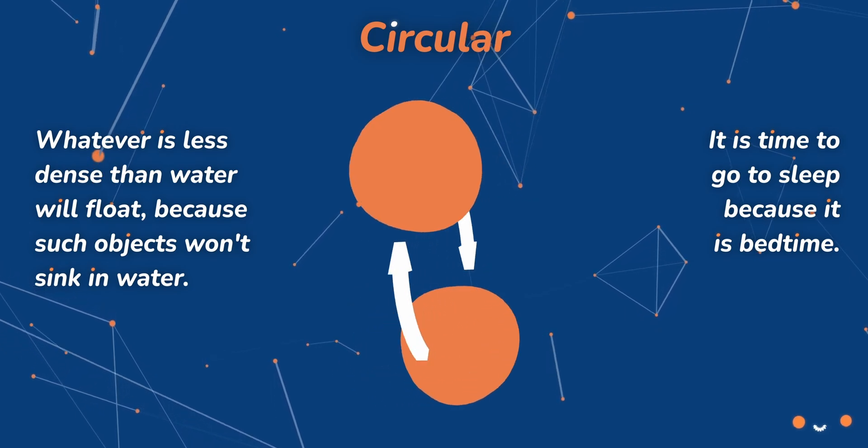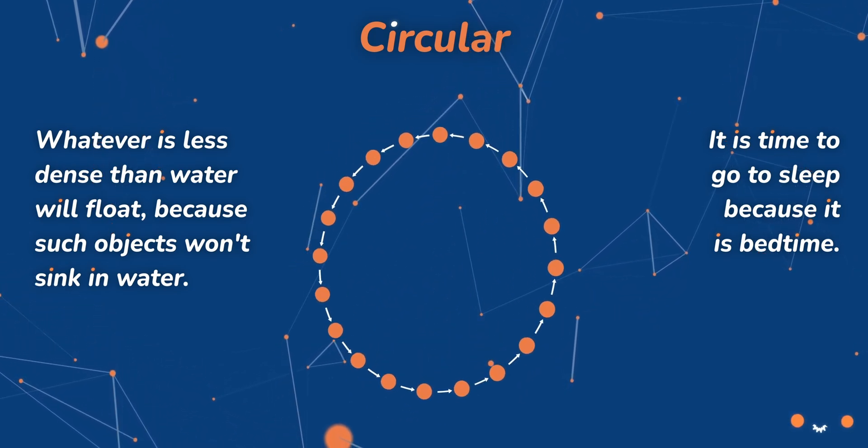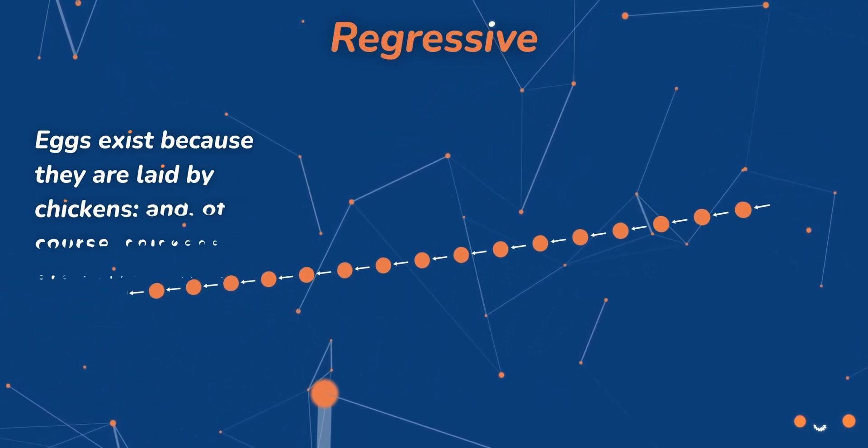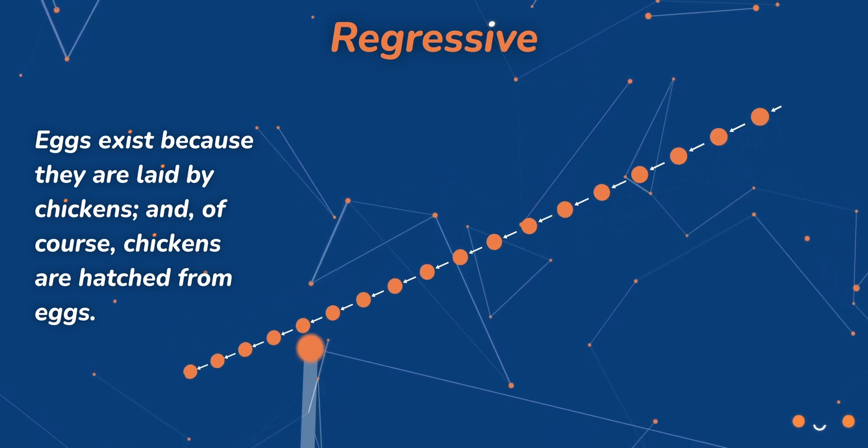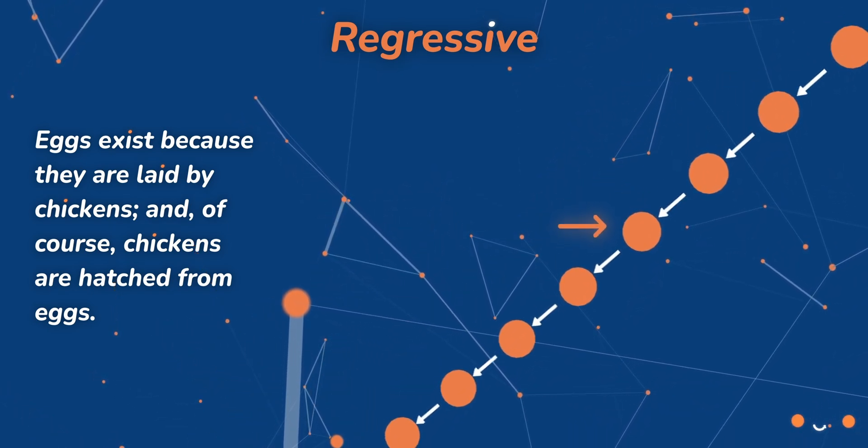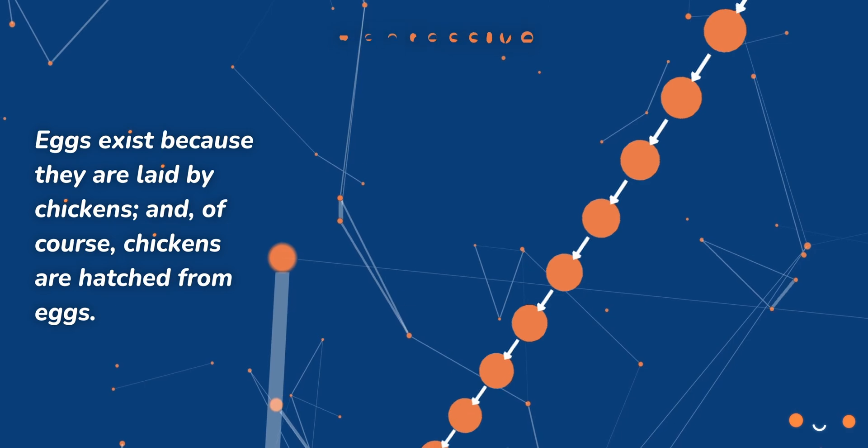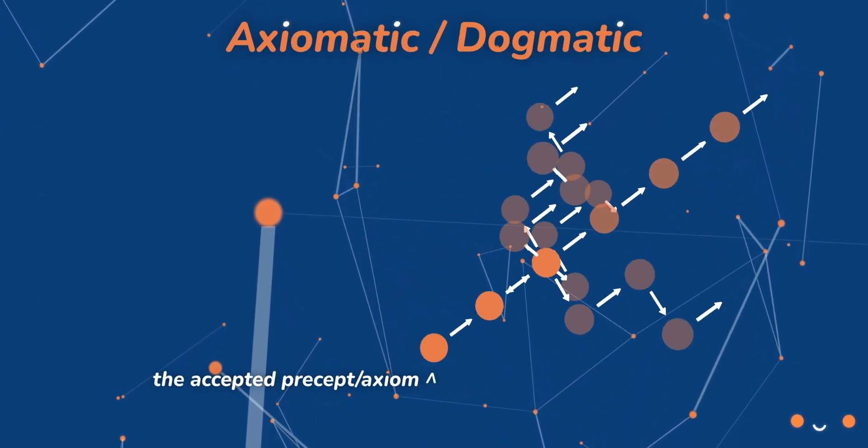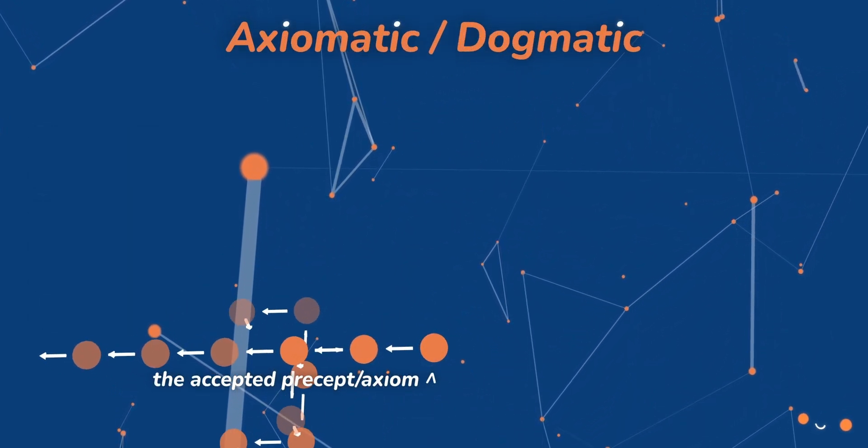In the circular argument, the theory and proof support each other. It is what it is. In the regressive argument, each proof requires a further proof, ad infinitum. So this proof requires the one before it, and so on. In the axiomatic argument, the proof rests on accepted precepts.